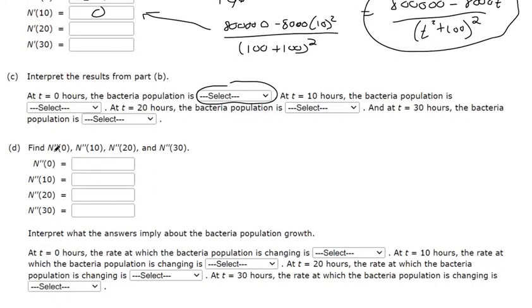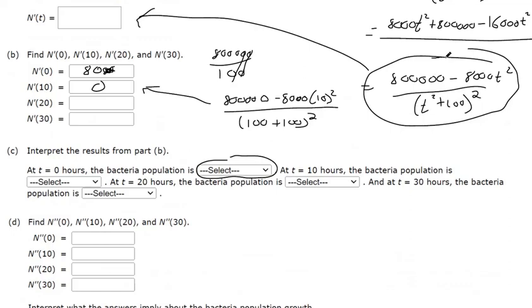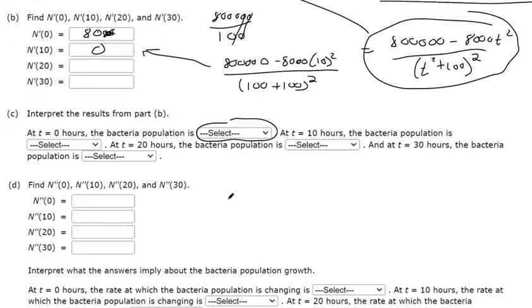Now they want us to find the second derivative and plug some numbers in. So here is our first derivative. To find a second derivative, we just need to take a derivative of the derivative. So same thing, we want to use quotient rule. So the derivative of the top function, negative 16,000t, times the bottom function kept the same. Minus the top function kept the same.